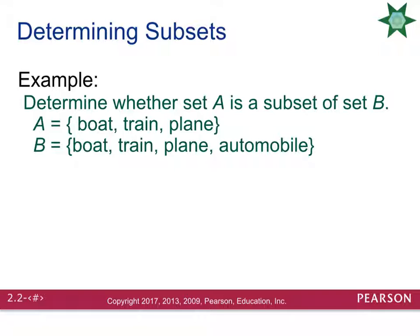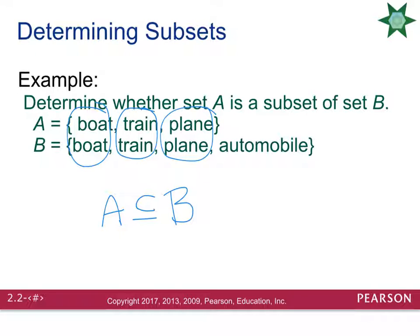Let's look at an example. Determine whether set A is a subset of set B. Set A has boat, train, and plane in it. You need to look at set B and verify that B also has a boat, a train, and a plane. Because B has all three of those items, we can say that A is a subset of B. Notice that B has an extra item — automobile — but that's fine. The sets do not have to be equal to each other, though they can be.